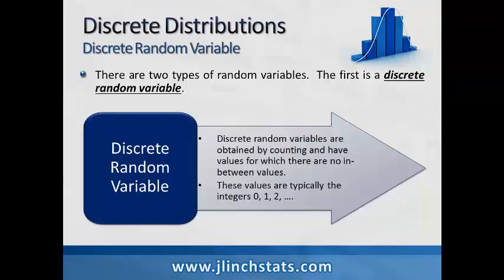Let's begin by talking about a discrete random variable. A discrete random variable can be obtained by counting, and discrete random variables have values for which there are no in-between values. For example, these values are typically the integers 0, 1, 2, and so forth. So a discrete random variable is obtained by counting, and its values have no in-between values.